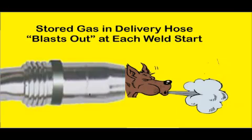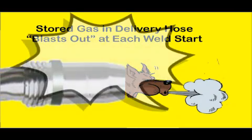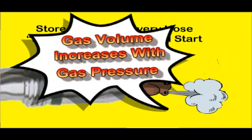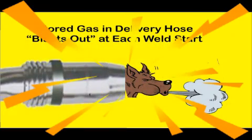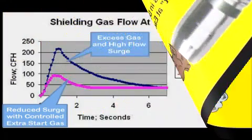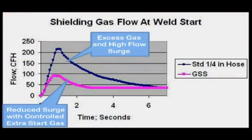When welding stops, increased pressure causes excess gas to be stored in the gas delivery hose, up to 7 times the physical hose volume. This excess blasts out at each weld start with conventional gas control systems. We have measured peak flow in excess of 250 CFH at the weld start. This graph is from a fabricator where the gas flow rate at the weld start peaked at 225 CFH and exceeded 75 CFH for 4 seconds after the start.